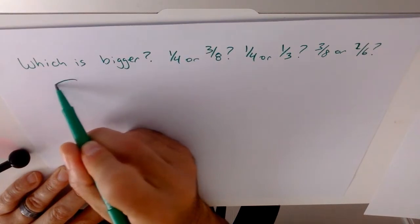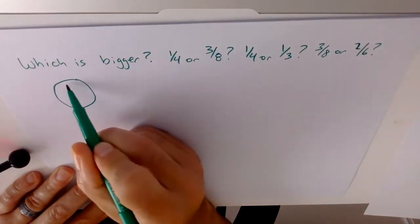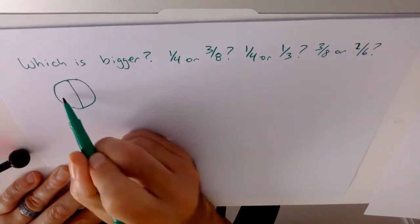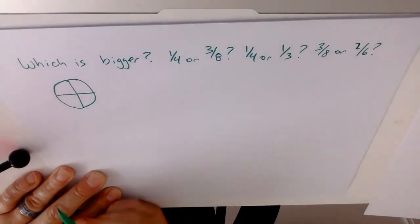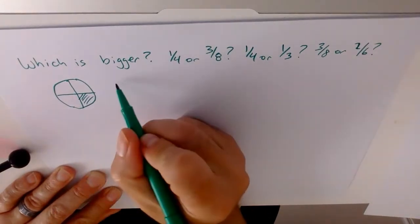If we're going to draw 1 quarter, we'll draw our circle here, and this is something most kids can do. They'll just draw a circle and get a quarter of it, and you want to know if 3 eighths is bigger.